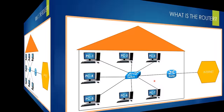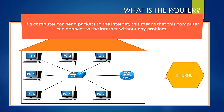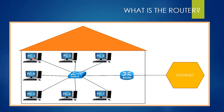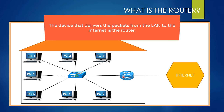How will PC one send packets to the internet? To be able to do this, PC one must send its packet to the switch first, because there is no other way for PC one to reach the router. If PC one wants to send a packet to the internet, this packet must reach the router no matter what, because the router is a door to access the internet.